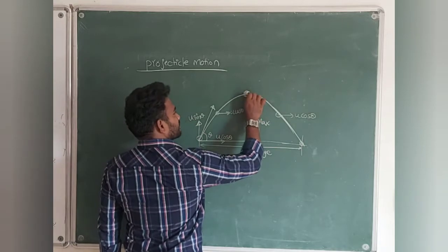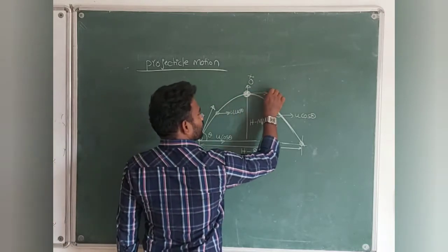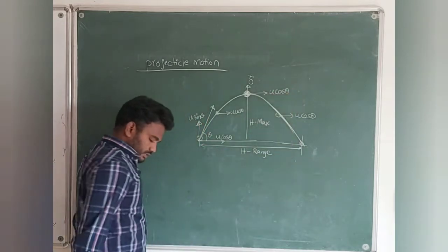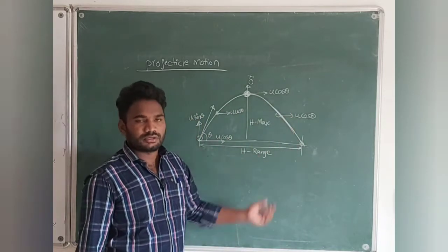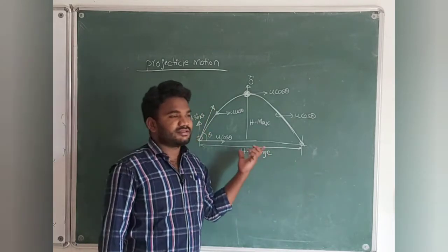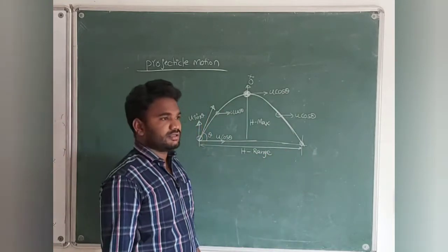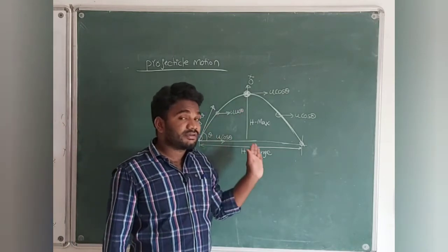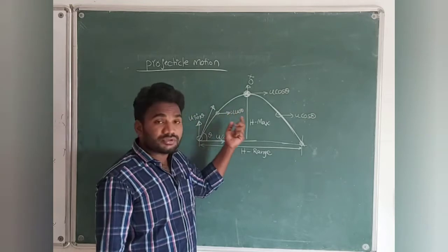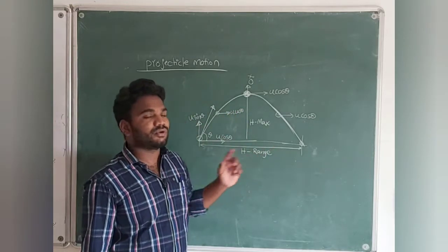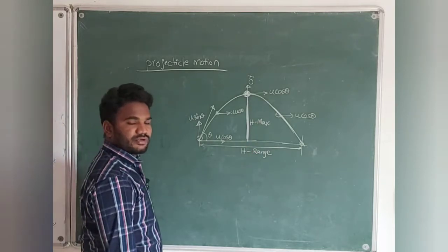Once the object reaches maximum height, the vertical component u sin theta becomes zero, but the horizontal component u cos theta remains. The horizontal velocity does not change anywhere because acceleration is zero horizontally. But vertical velocity changes because a force — gravitational force — is applied vertically, giving gravitational acceleration g.